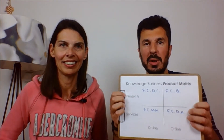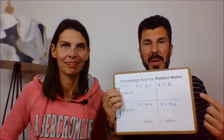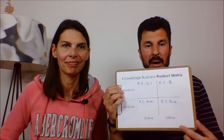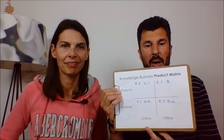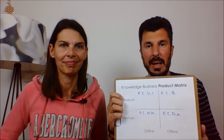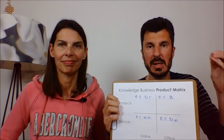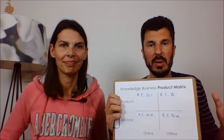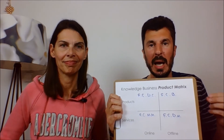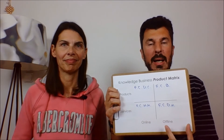Now it's time for us to find your ideal product to start with, using the Knowledge Business Product Matrix. What we have here is a split between products and services that are being offered online and offline. You can package the same knowledge, the same insights, the same passion in many different ways and create many different products and services.